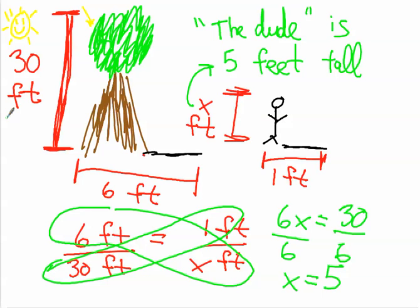And that is how you solve dude tree problems. Whether they give you this one or this one or that one or that one, you just create a proportion with the shadows on top. You can do the people on top, too, as long as it's consistent. And that is how you solve those kinds of problems.